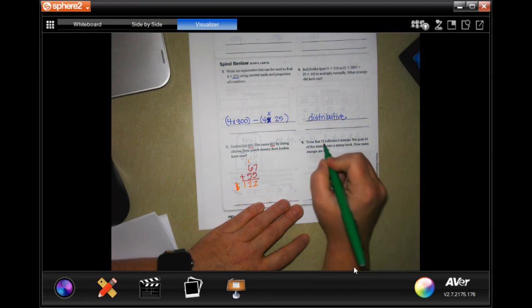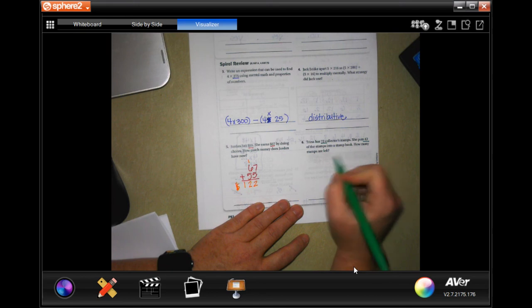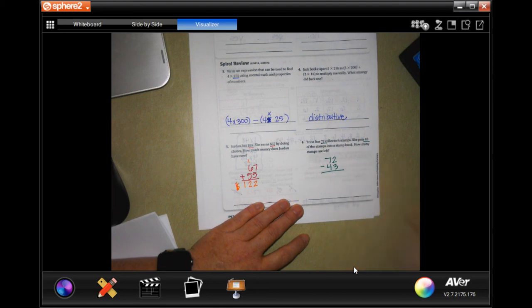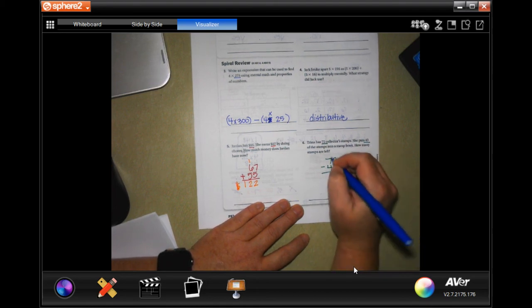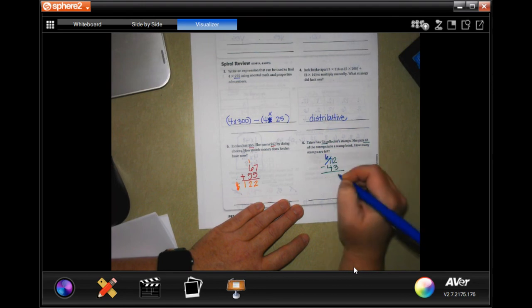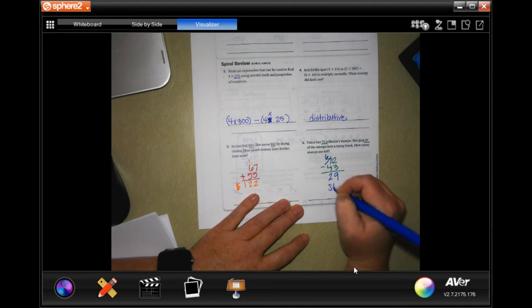Trina has 72 collector stamps. She puts 43 of the stamps into a stamp book. How many are left? Well, 72 minus 43. Two cannot take away three. So, I need to borrow one. Making that 12. 12 minus three is nine. And six minus four is two. So, 29. Don't forget to write stamps. That's your label.